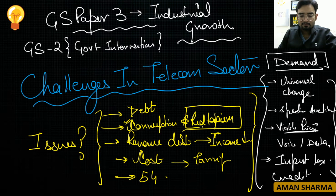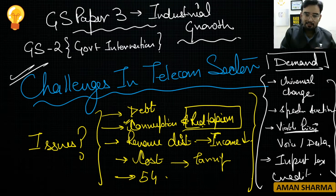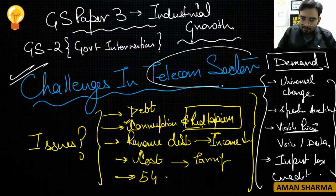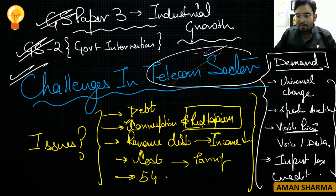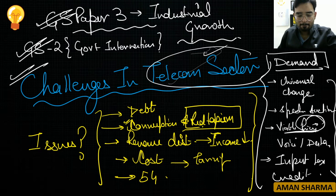So these are the key demands from the telecom sector. To summarize: AGR is what it is, the reason rates have increased, and all of this falls under challenges in the telecom sector — which is part of GS Paper 3 and GS Paper 2.